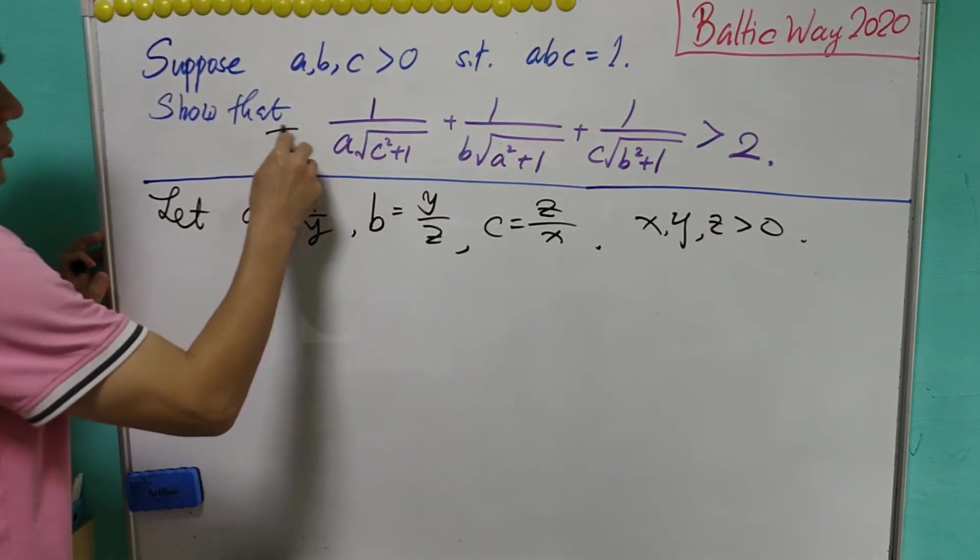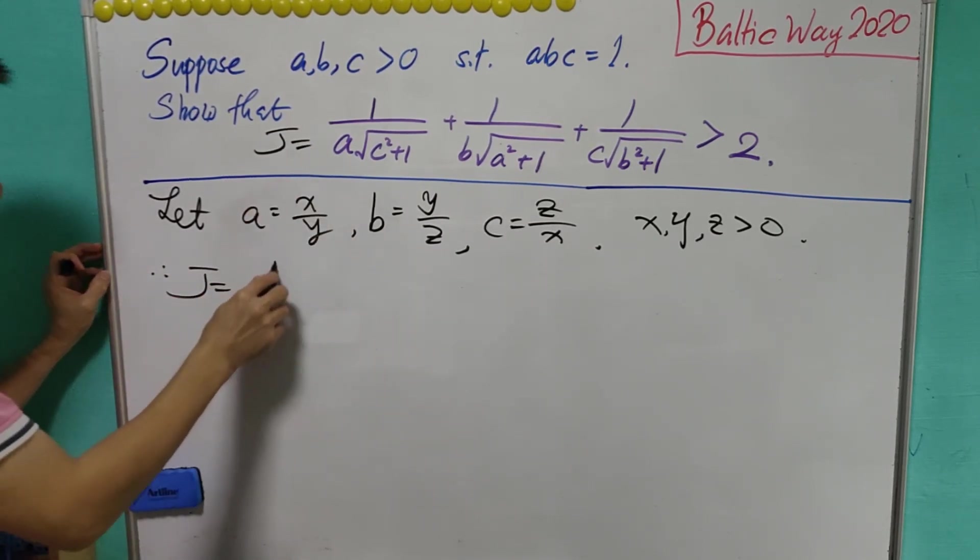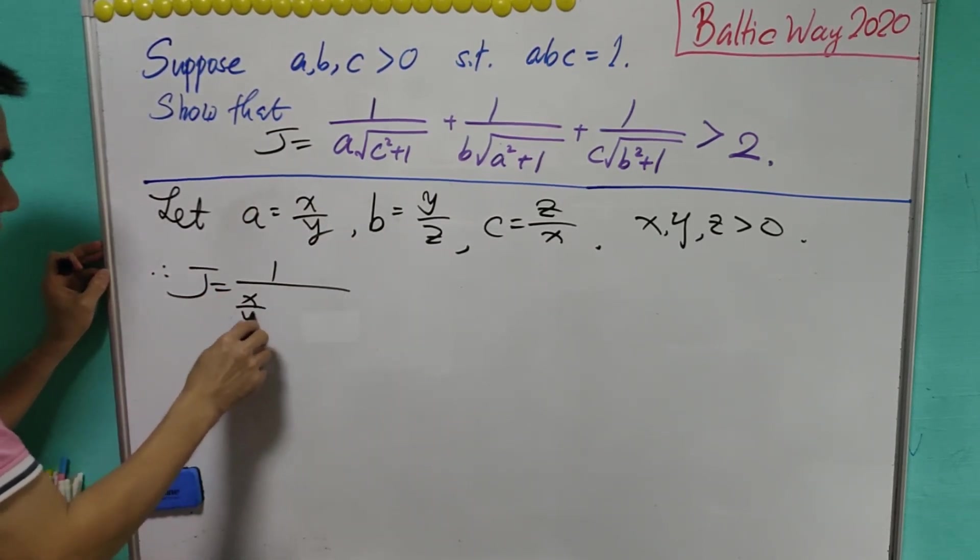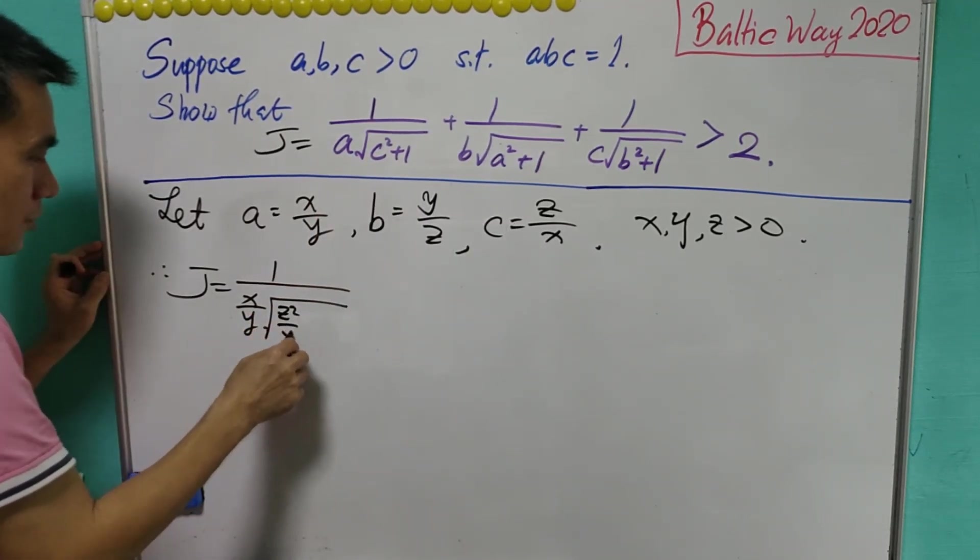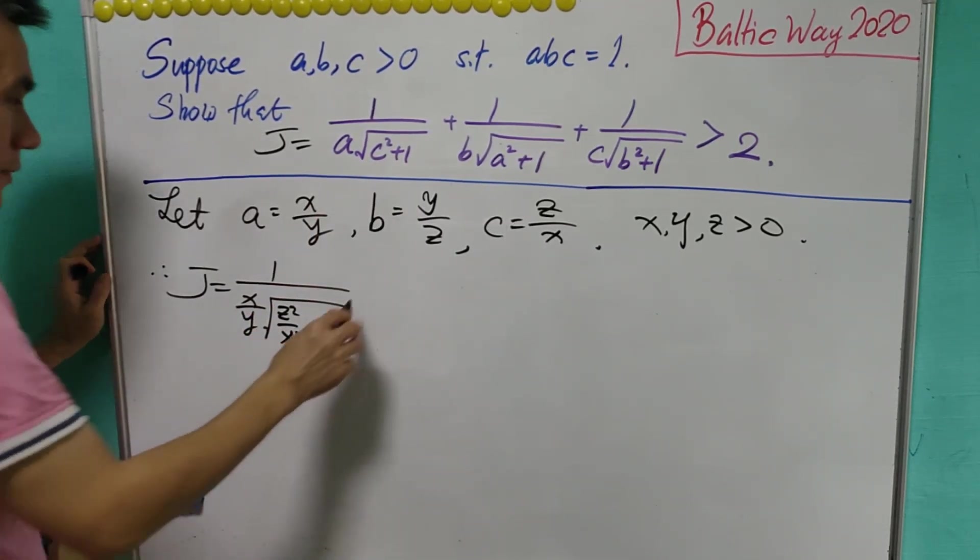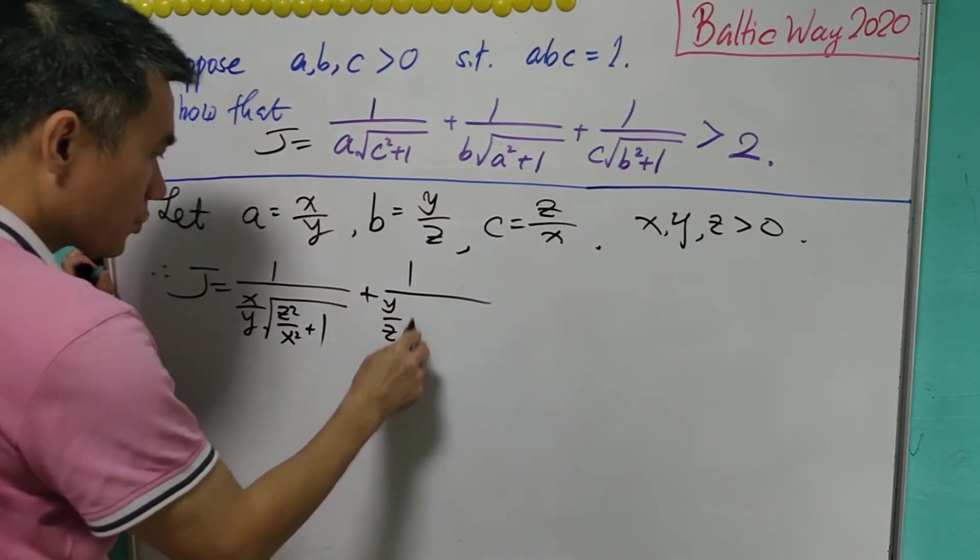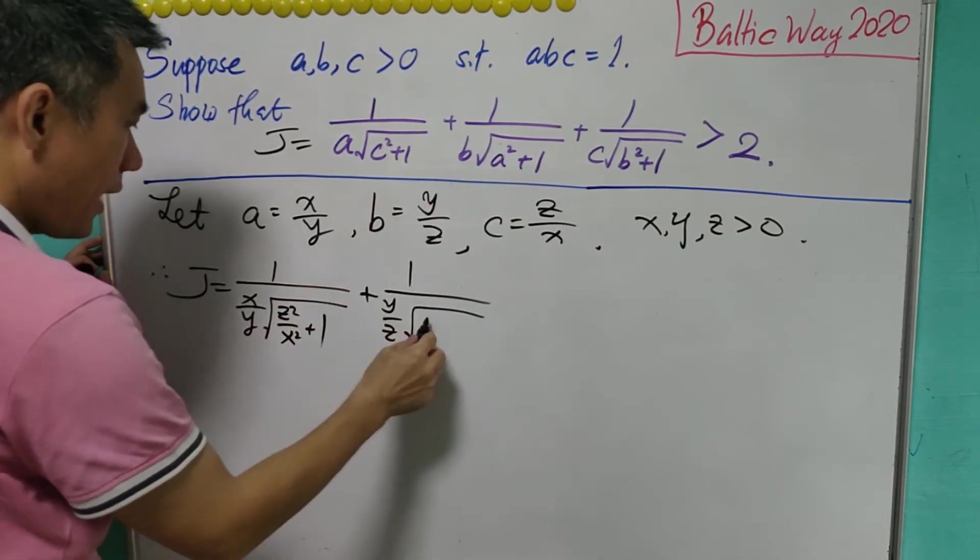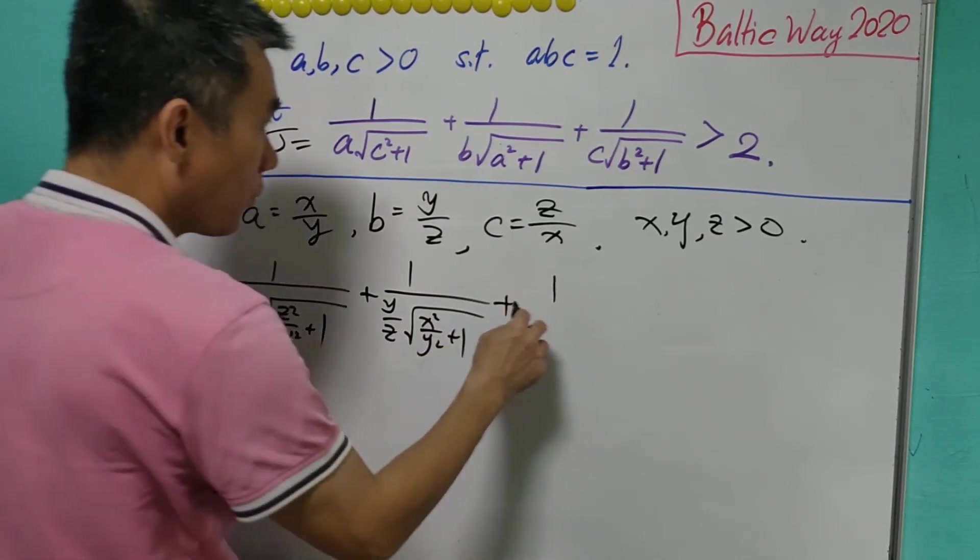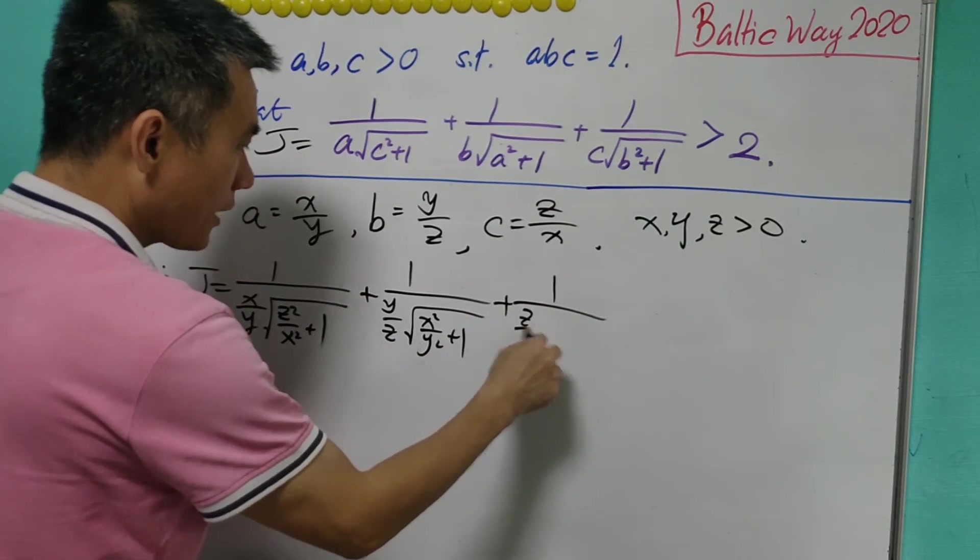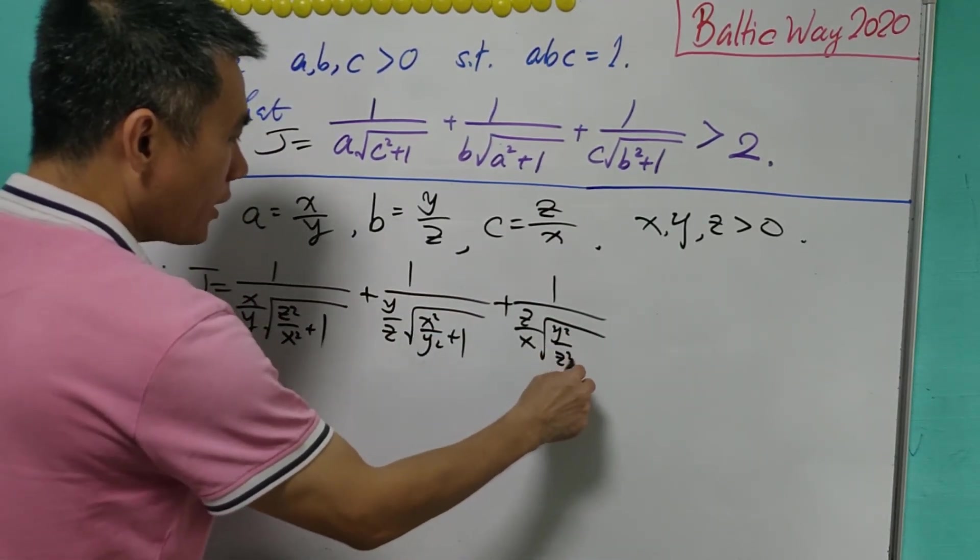So call this expression J. Now we say that J will equal 1 over (x over y) times the square root of (z squared over x squared plus 1), plus 1 over b, that is y over z, times square root of (x squared over y squared plus 1), plus 1 over c, that is z over x, times the square root of (y squared over z squared plus 1).